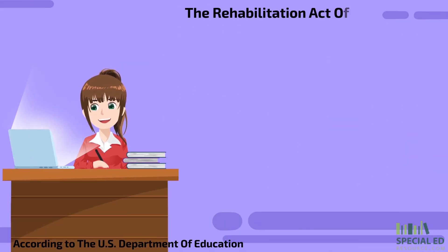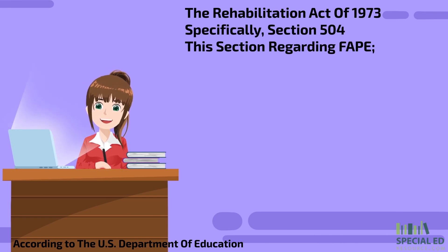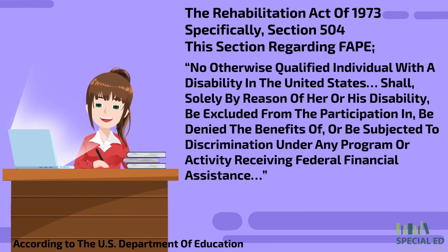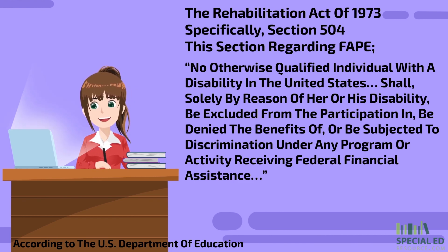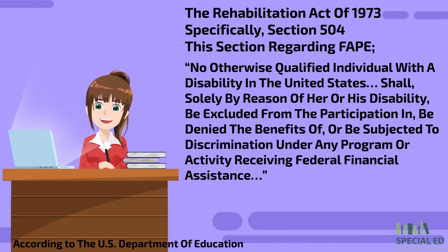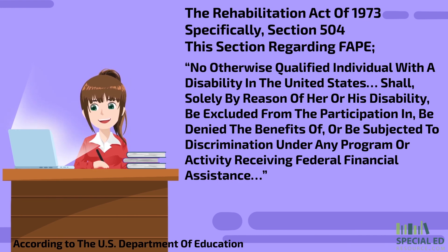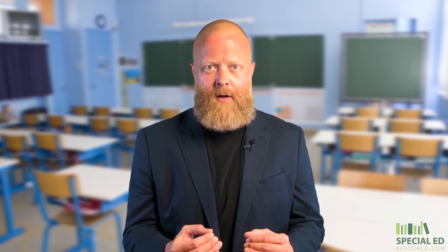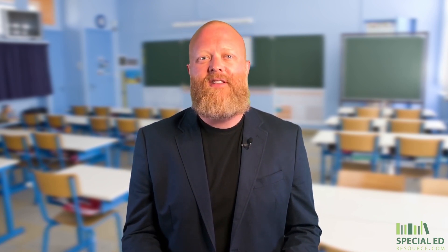So what changed? Well, it started with the Rehabilitation Act of 1973, specifically Section 504 of that act. This section regarding FAPE says: no otherwise qualified individual with a disability in the United States shall, solely by reason of her or his disability, be excluded from the participation in, be denied the benefits of, or be subject to discrimination under any program or activity receiving federal financial assistance. Since the free portion of FAPE spells out federal funds being used for schooling, children with special needs could finally receive the same public education that their age peers had been receiving, with modifications as needed.